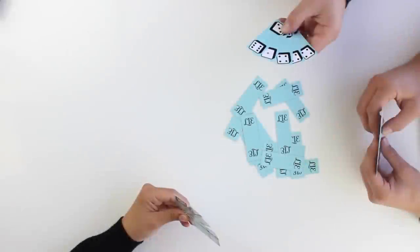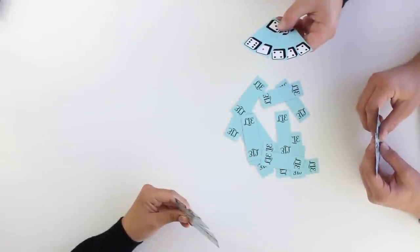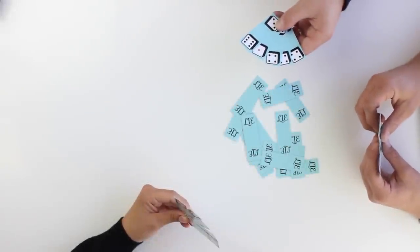The opening bidder begins the round by announcing the initial bid. Once the opening bid is made, players take turns in clockwise order. When it's a player's turn to bid, he must either make a new bid or challenge the previous bid.